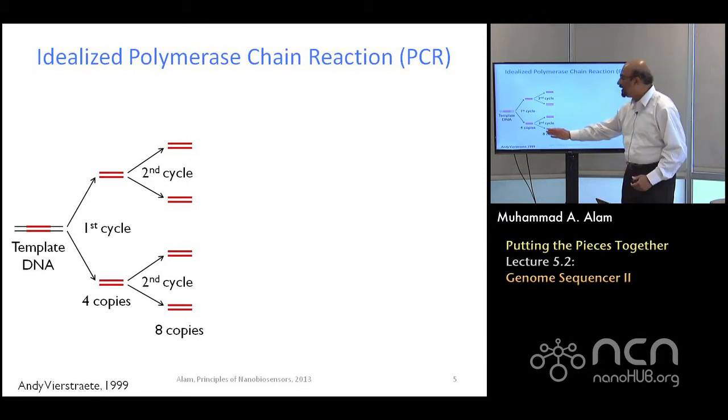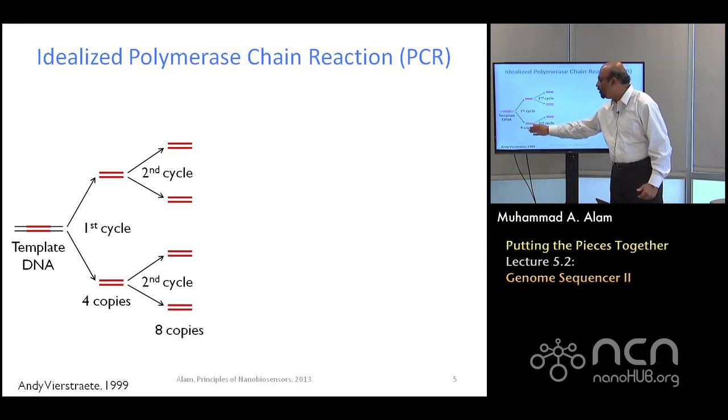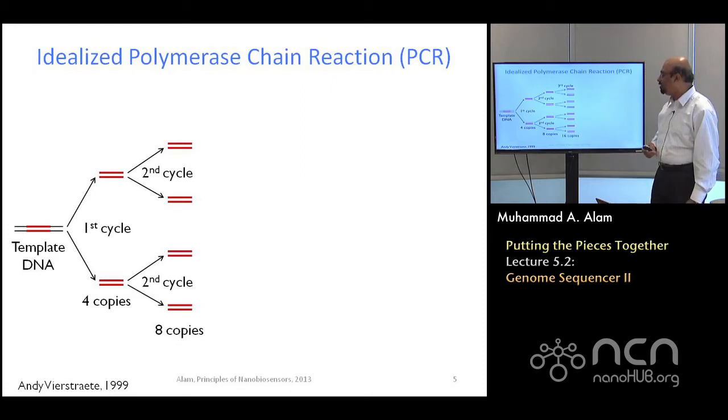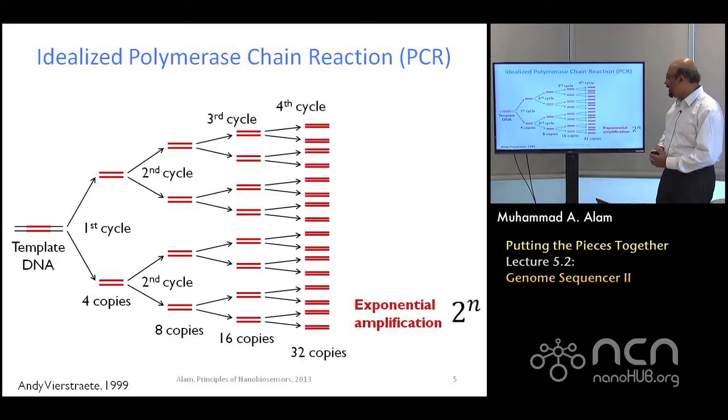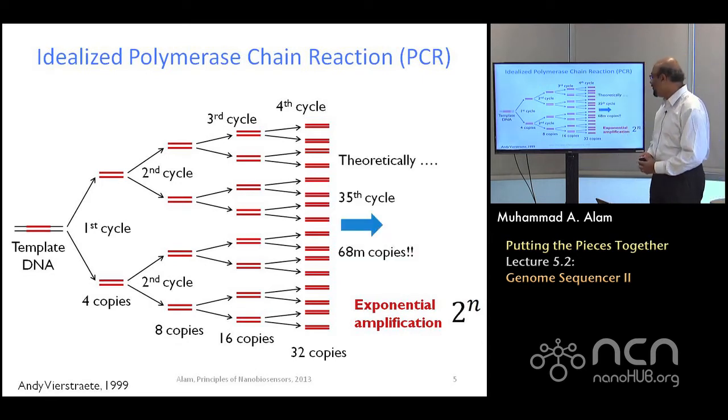In each cycle, we can double it. After first cycle, four copies. After second cycle, eight copies, and so on. Eventually, if the number of cycles is n, then the total number is 2 to the power of n. For example, by 35th cycle you could have 68 million copies. We don't need that many. We need about 10,000, so we don't have to go that far.